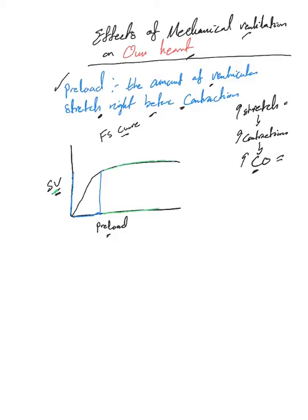Sometimes they call this the insensitive portion of the curve, and this is the sensitive portion of the curve. So you would like the preload to remain in this area where it has a great impact on the stroke volume.